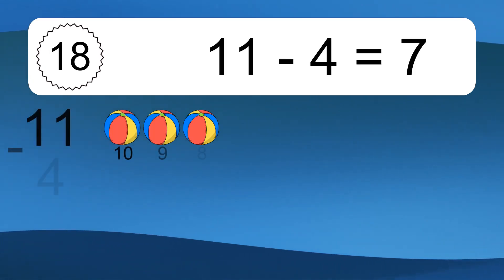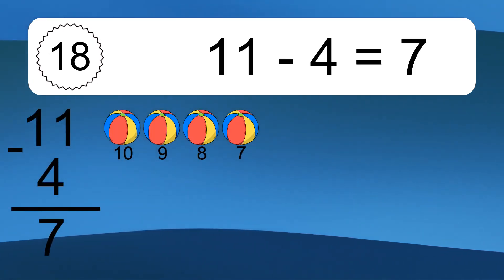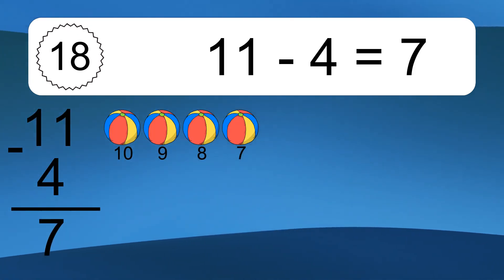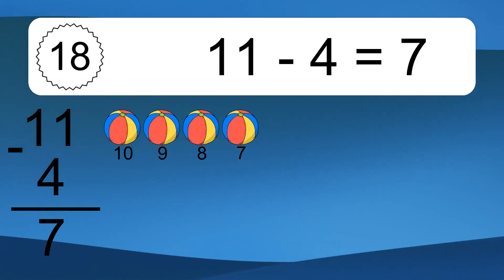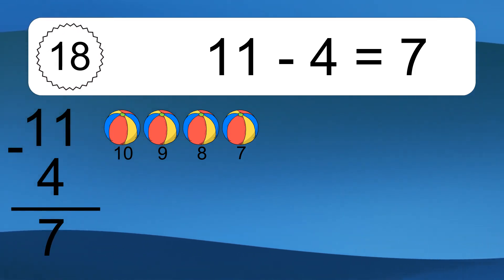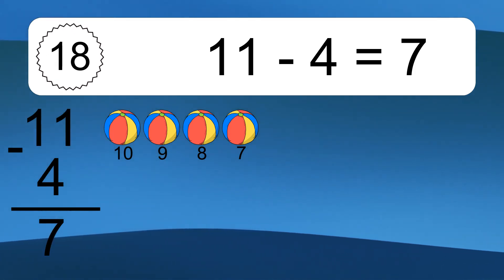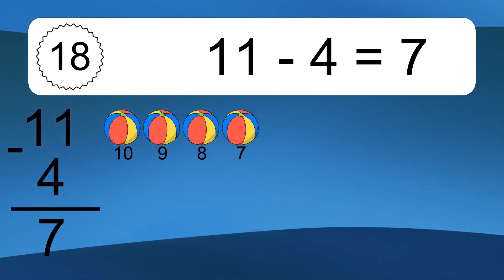11 minus 4 equals what? 11 minus 4 equals 7. Let's count it. 10, 9, 8, 7.